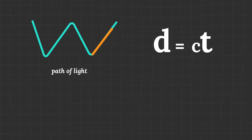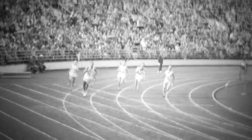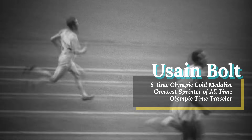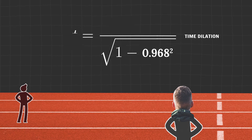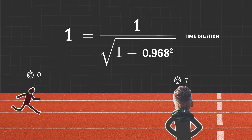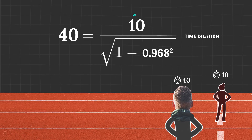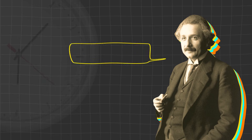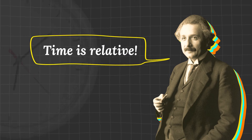And the faster you run, the slower your clock ticks. So in Olympic races, Usain Bolt is actually the best time traveler. If he ran at 96.8% the speed of light and took 10 seconds to finish a race according to his clock, a stationary judge would record 40 seconds, to which he would obviously object. But their argument would be pointless since time is relative.